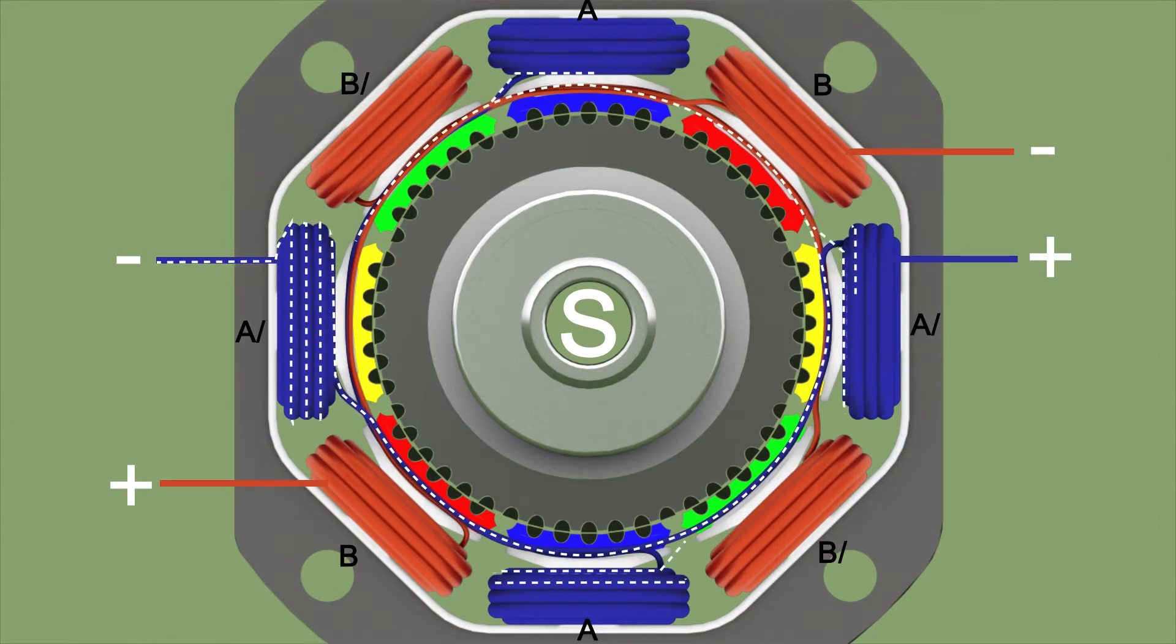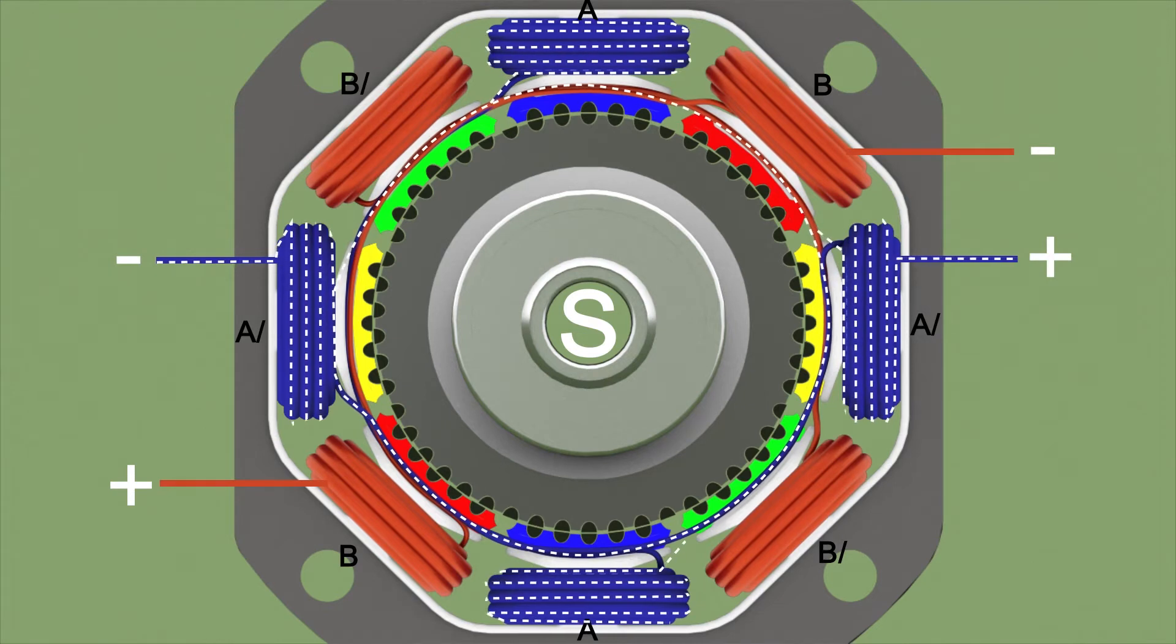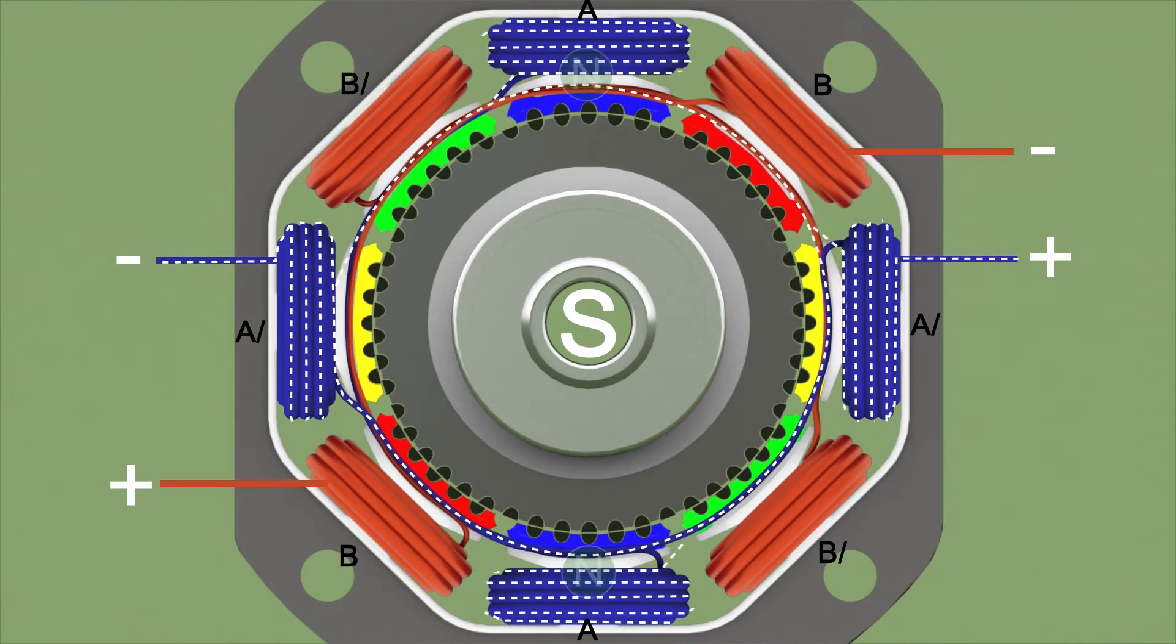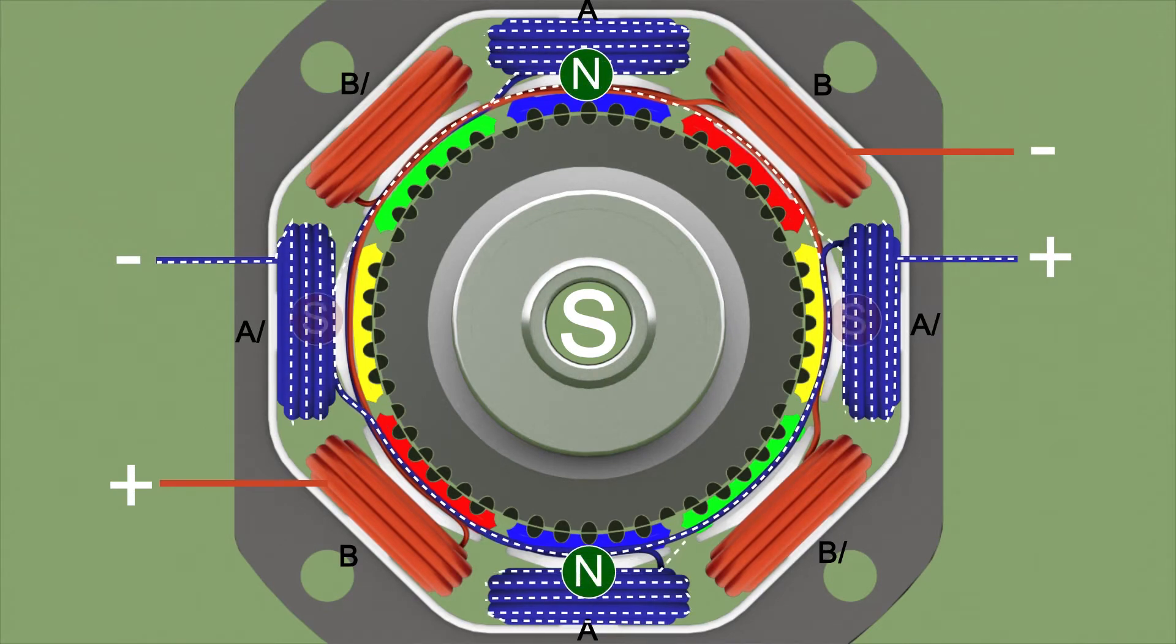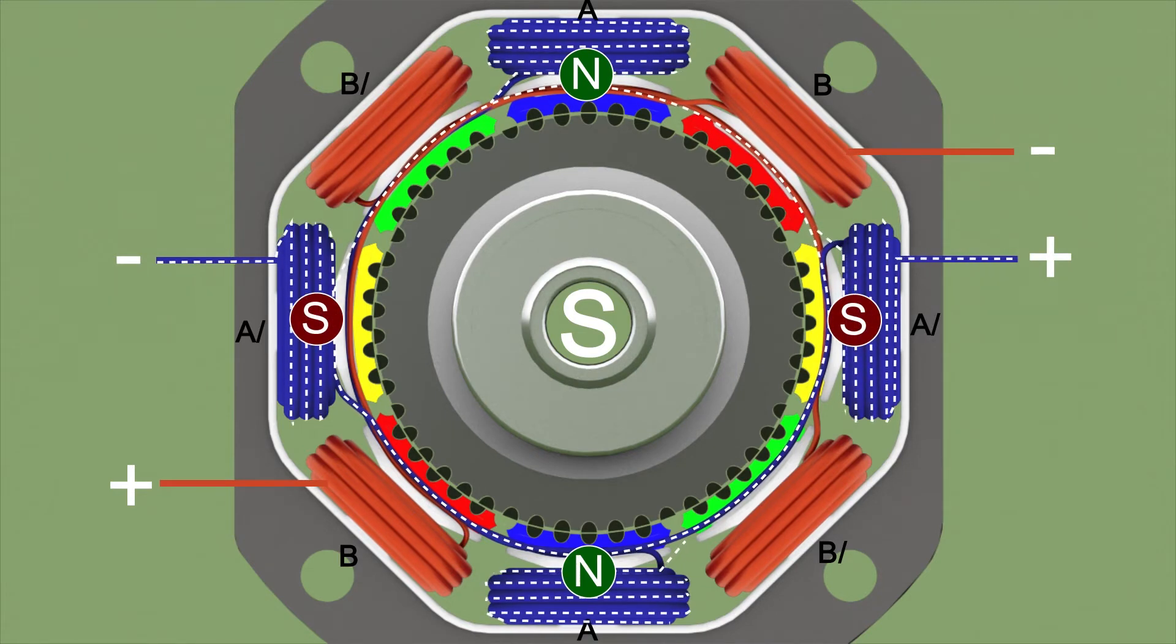When group A is energized, blue stator windings are magnetized as shown. One pair of stator poles become north pole and the other becomes south pole. We know that opposite poles attract so they will be aligned.